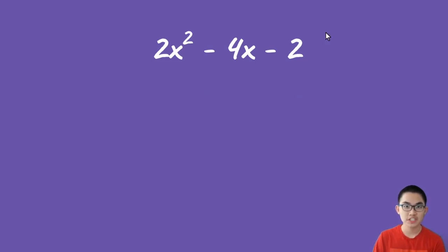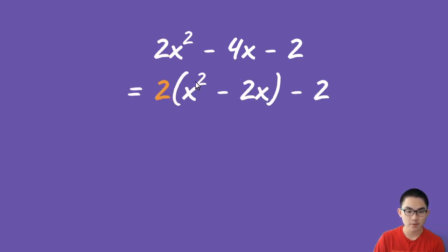We have the function 2x² - 4x - 2. The first thing you want to do is look at the coefficient and factor it out for the first two terms. That coefficient is 2. You're going to factor the 2 out from 2x² - 4x. This will give you 2(x² - 2x) - 2.